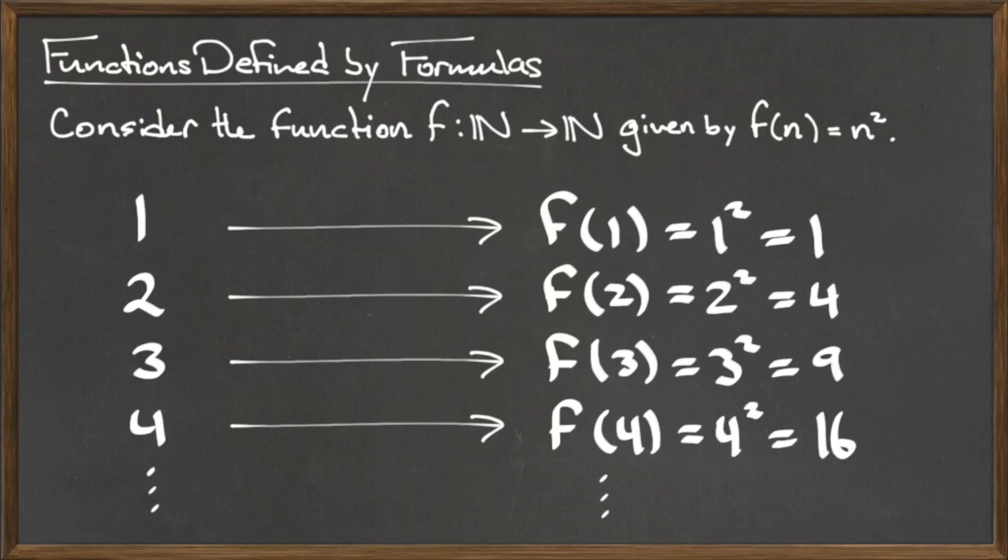So, the image of 1 under f is 1 squared, which is 1. The image of 2 under f is 2 squared, which is 4. The image of 3 under f is 9. The image of 4 under f is 16. And so on.